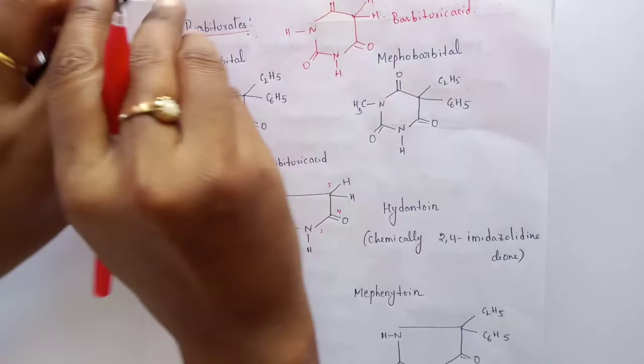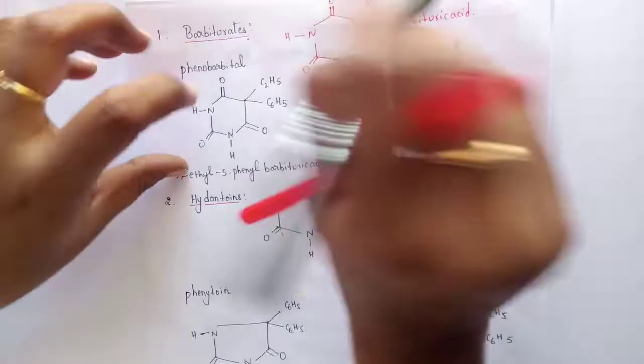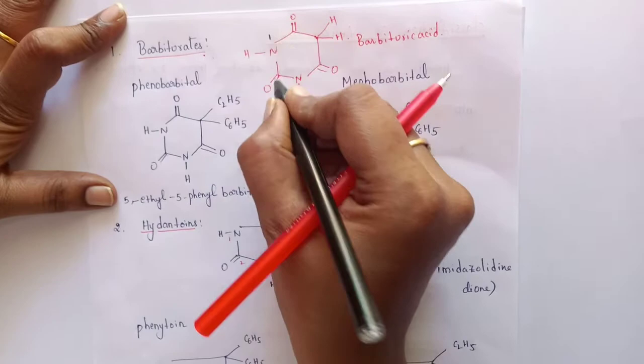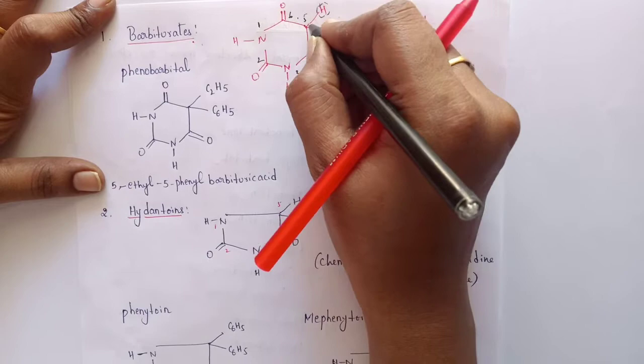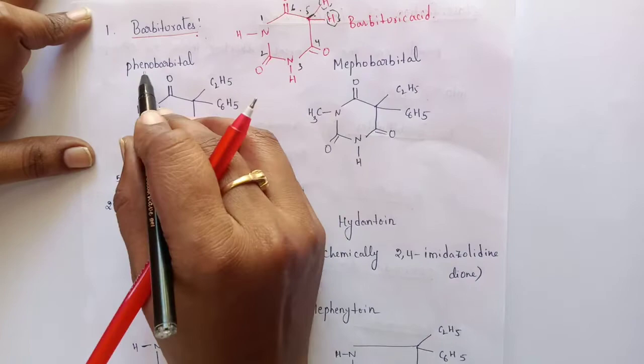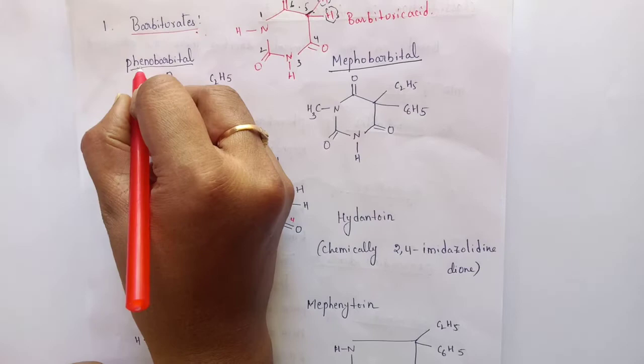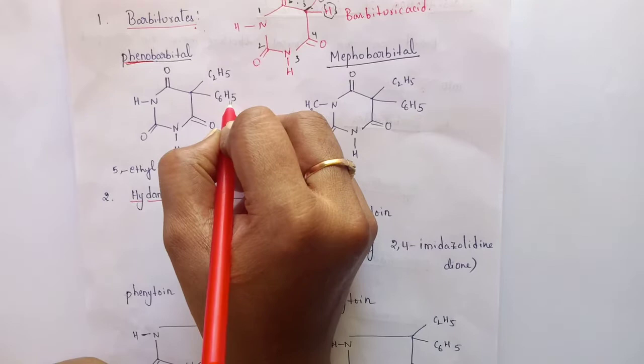Coming to the numbering of this compound: for the nitrogen we start giving the number 1, followed by 2, 3, 4, 5, and 6. Generally, the substitutions of barbituric acid occur at the hydrogen atoms located at the 5th position. These 2 hydrogen atoms are always substituted by alkyl or allyl groups — one hydrogen must always be ethyl, and the other varies depending upon the compound.